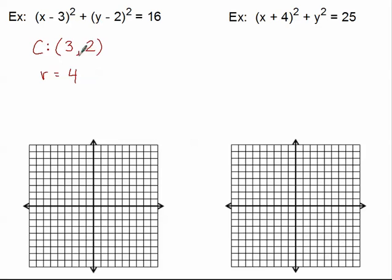When graphing, first plot the center at (3, 2) — go over 3 and up 2. Then, since the radius is 4, go 4 units in each direction: up 4, down 4, right 4, and left 4 from the center. Connect those four points into a nice circle, trying to make it as round as possible. That's a good sketch of our circle.